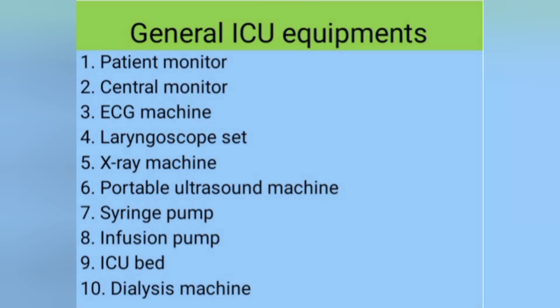Under general ICU equipments there are 10 equipments: patient monitor, ECG machine, laryngoscope set, x-ray machine, syringe pump, infusion pump, ICU beds, central monitor, dialysis machine, and portable ultrasound machine.